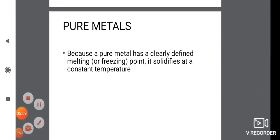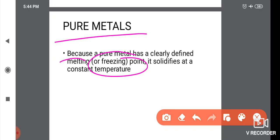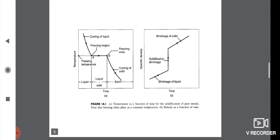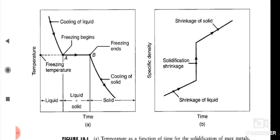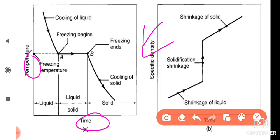Next, pure metals. For the solidification process in pure metals, it will be clear and well-defined. Solidification occurs at a constant temperature in pure metals. The temperature-time graph is very important in this solidification process, and the graph is linear.